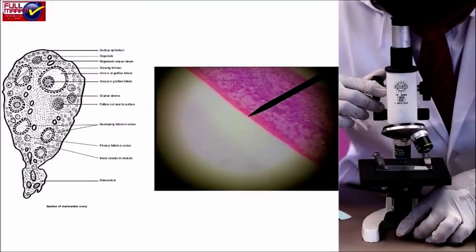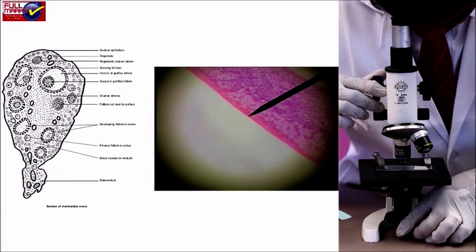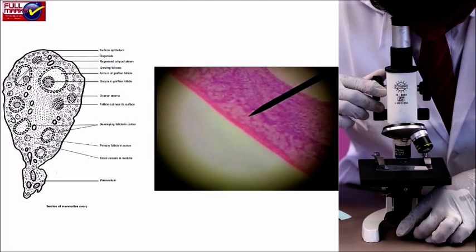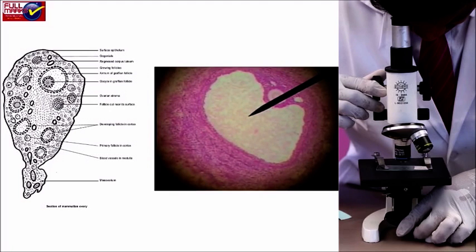Observations: each ovary is lined by germinal epithelium, which is surrounded by visceral peritoneum. Beneath the germinal epithelium, a connective tissue layer called tunica albuginea is present. Underlying it is the stroma layer, in which ovarian follicles are present at different stages. The primordial follicle contains a primary oocyte surrounded by a single layer of granulosa cells.